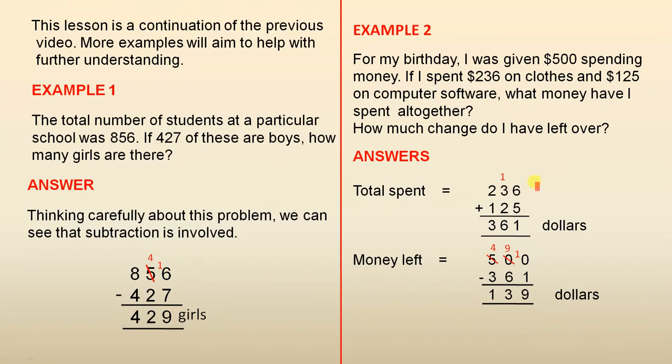So the answer is for the first part, the total amount spent. You add 236 and 125, and we have a little bit of trading here. So altogether you spent $361.